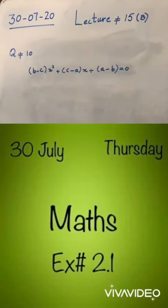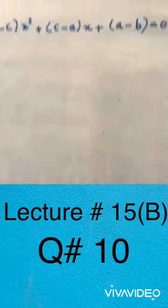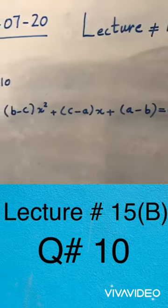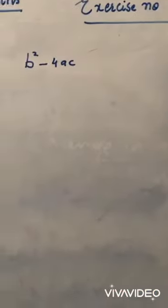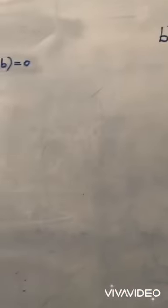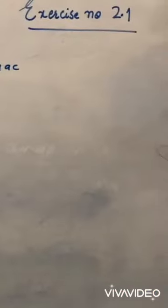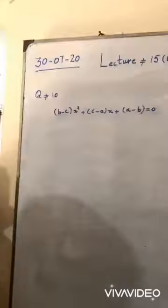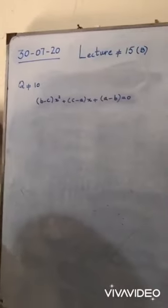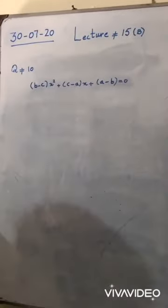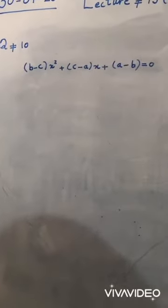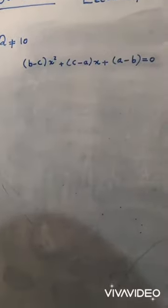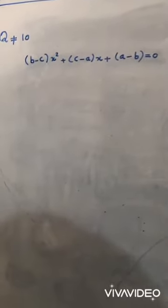This is question number 10 of exercise 2.1. The statement of the question is: show that the roots of this equation are real. If we want to show that the roots of this equation are real, we have to prove that the discriminant of this equation is positive.